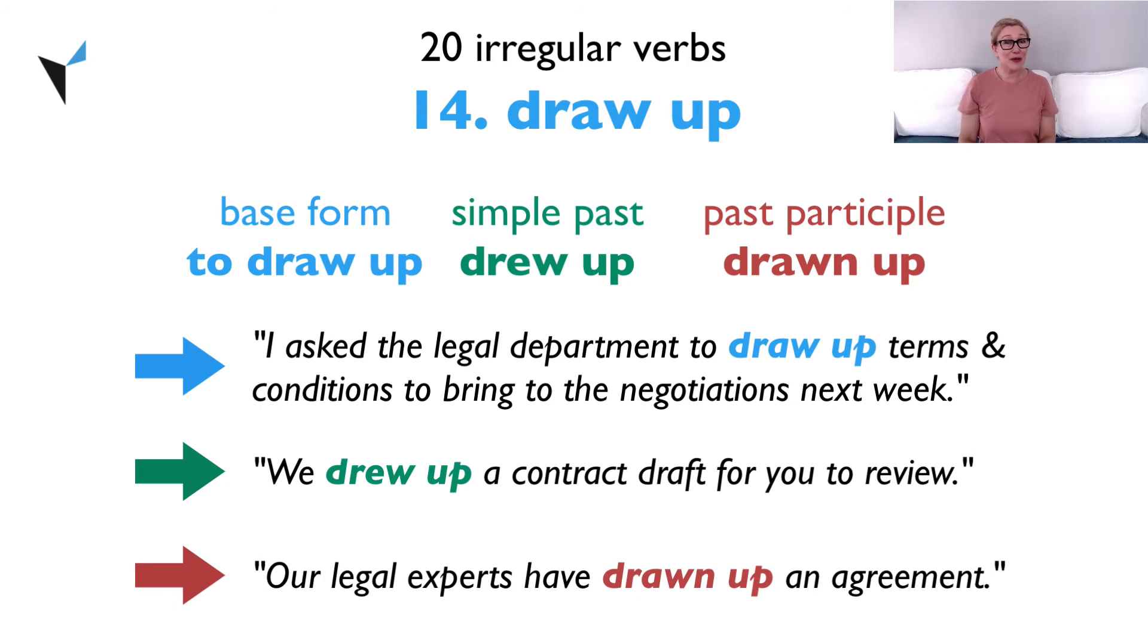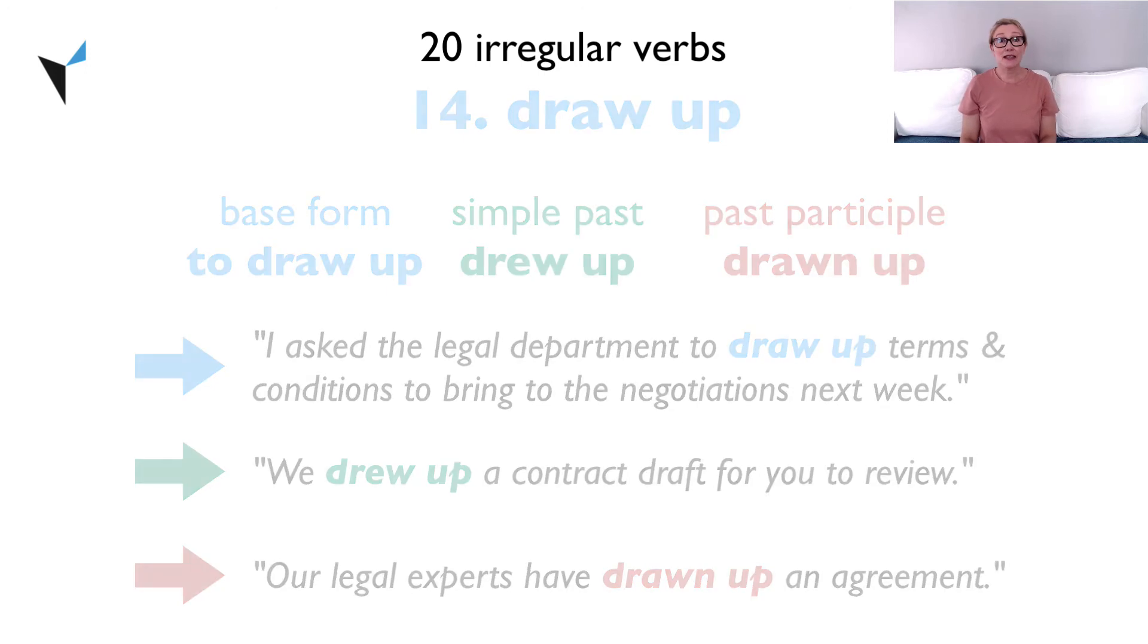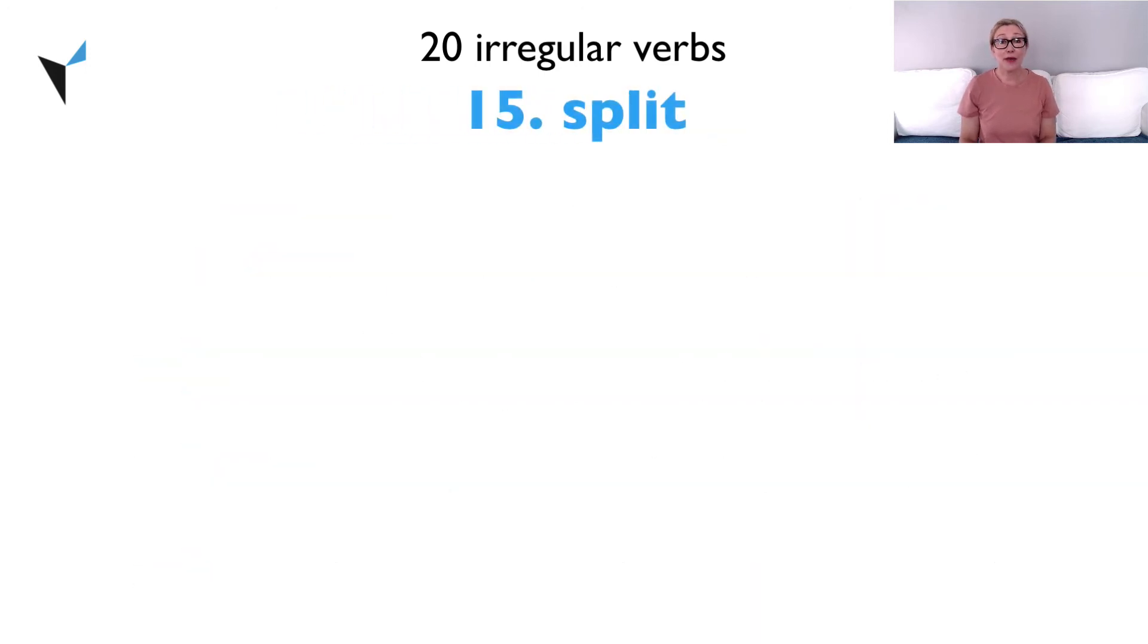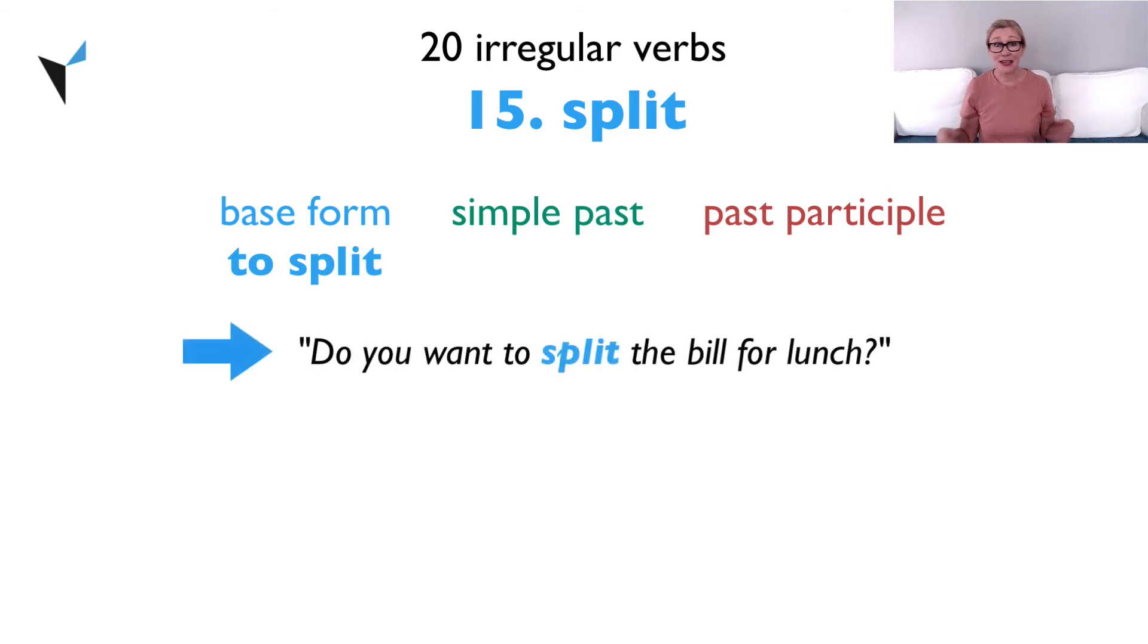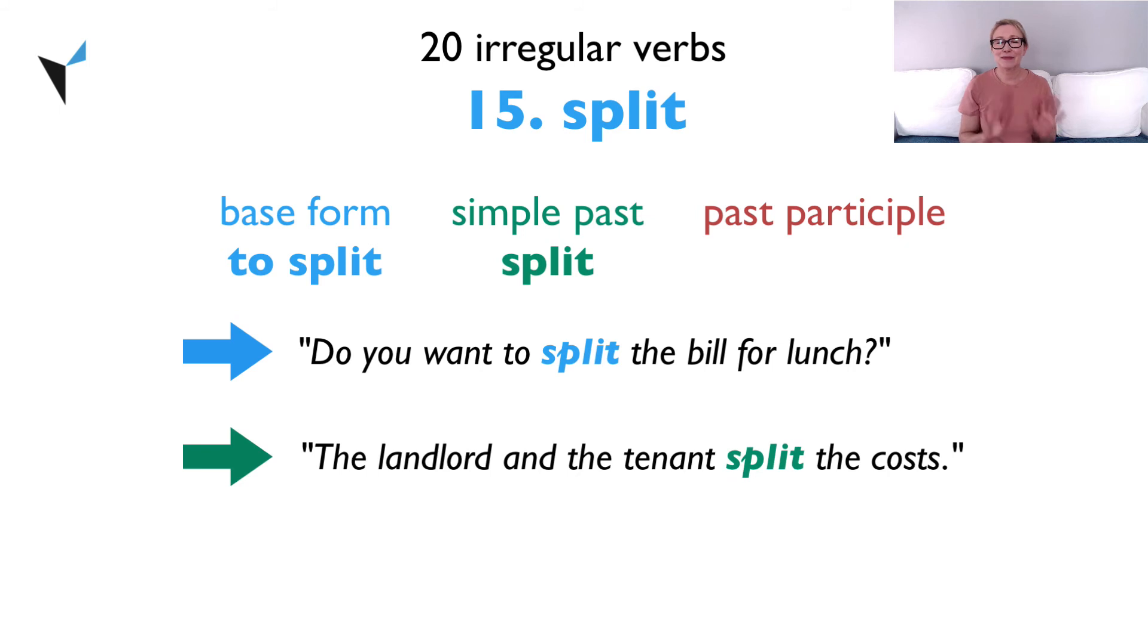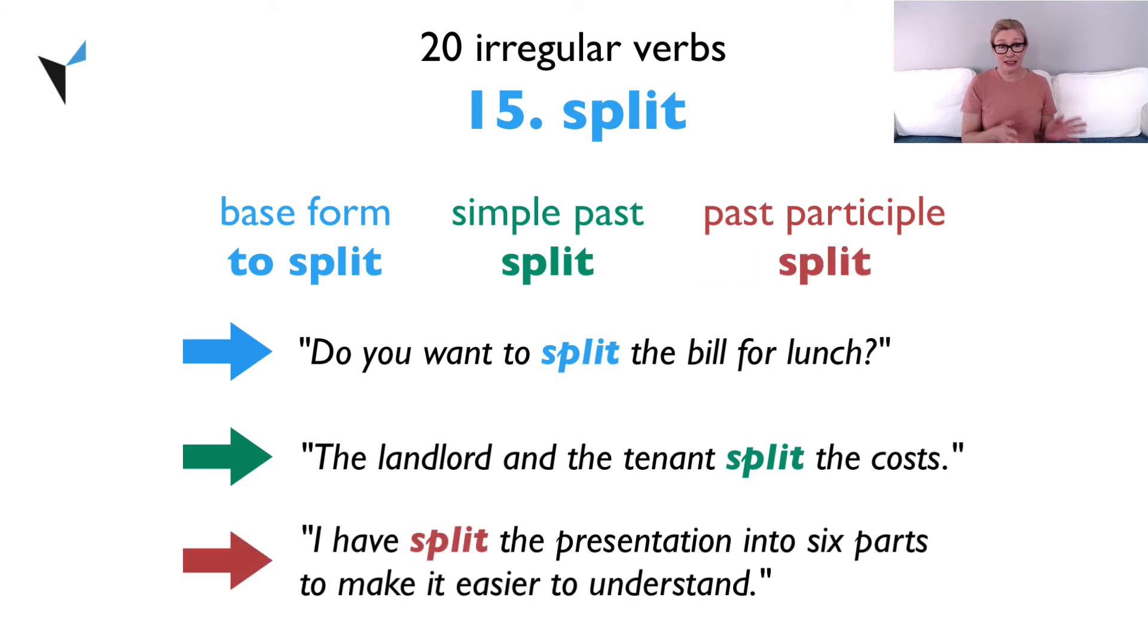And now on to verb 15, split. The base form is to split. Do you want to split the bill for lunch? The simple past is split. The landlord and the tenant split the costs. And the past participle is also split. I have split the presentation into six parts to make it easier to understand.